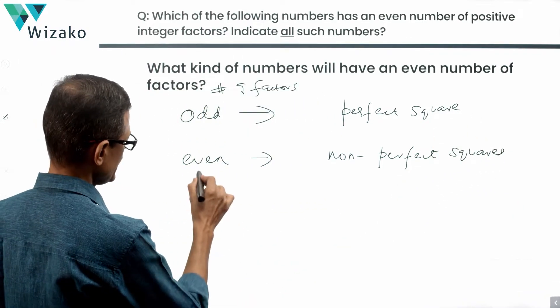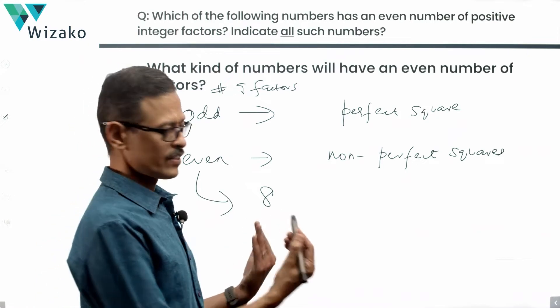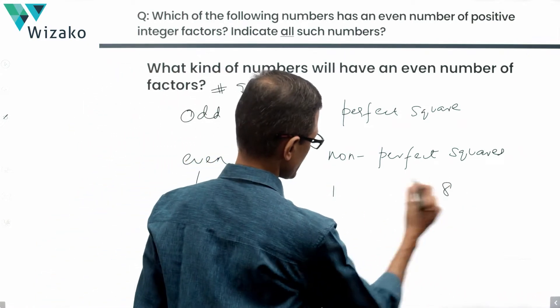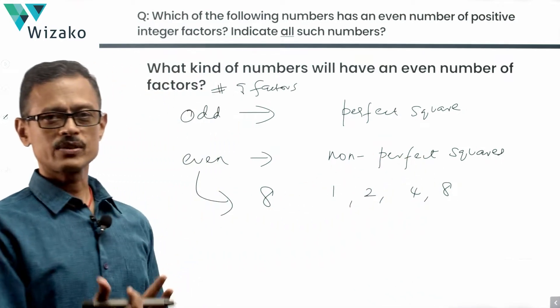An example would be basically for even number of factors, something like eight is an example. What are all the factors of eight? One is a factor of eight, eight is a factor of eight, two and four. So these are all the factors of eight. Eight is not a perfect square.